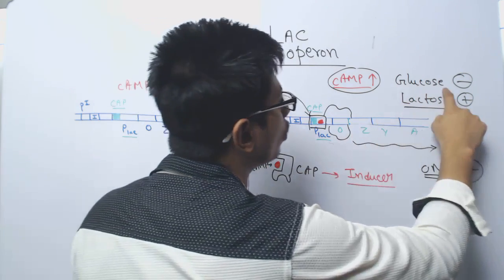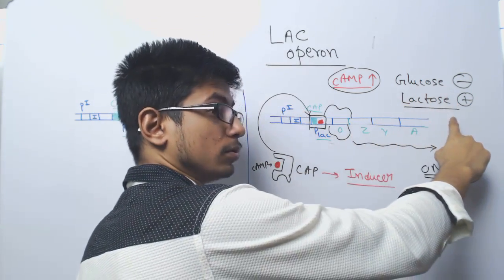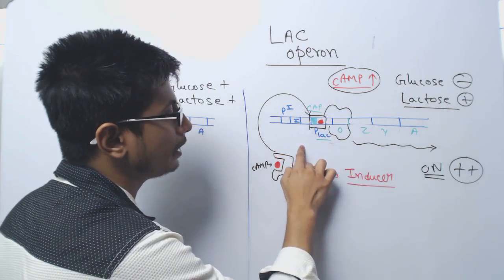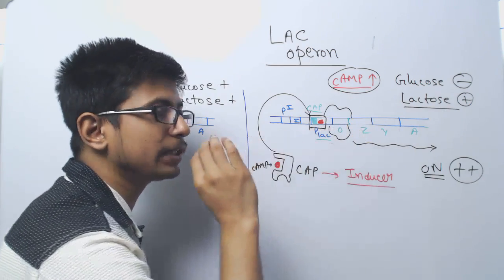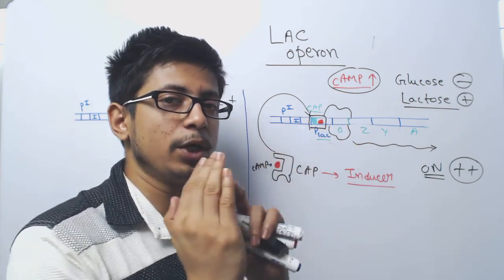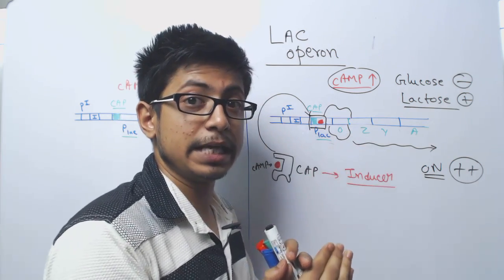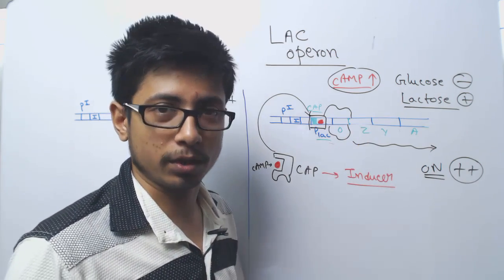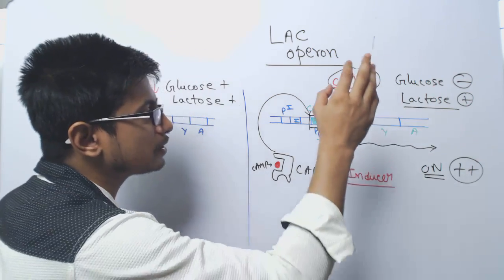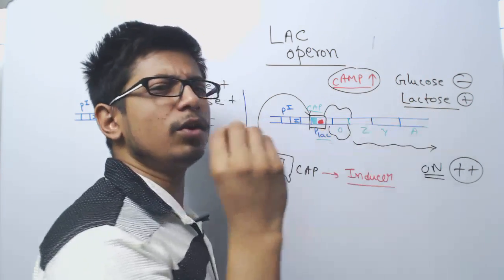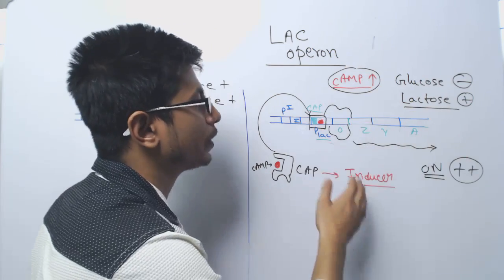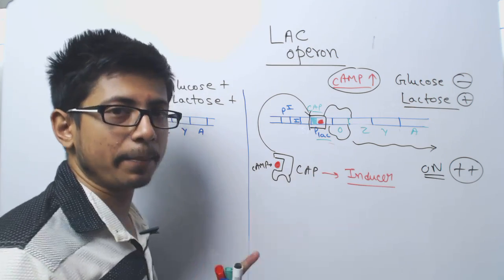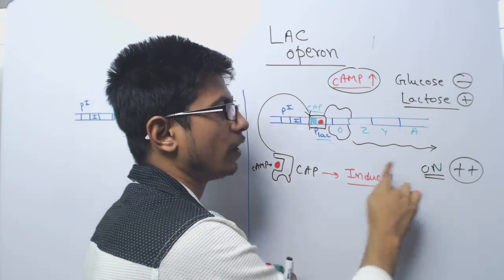Now imagine there is no glucose but also no lactose. In that case, the repressor will bind to and occupy the operator site. It will not allow RNA polymerase to move and transcribe the genes. Even if there is no glucose, if there is no lactose, the lac operon will not be turned on. But if lactose is present even in low concentration, with no glucose at all, the lac operon will be turned on due to catabolite activation by the cyclic AMP–CAP complex. This is the activation pathway of the lac operon in the scenario of no glucose and more lactose.